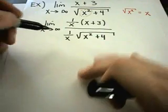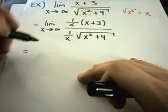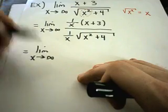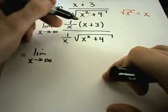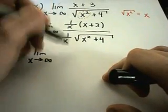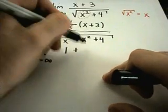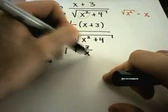So on the top's easy enough, I can distribute this out. So in the numerator, I'll have the limit as x goes to infinity. If I take 1 over x times x, I'll get x over x, which is 1. Then I'll have 1 over x times 3, that'll give me 3 over x.